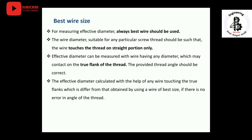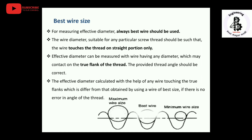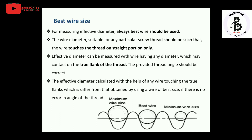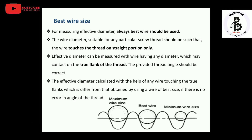The effective diameter calculated with the help of any wire touching the true flanks differs from that obtained by using a wire of the best wire size, if there are errors in the angles of the threads. Now we will see how we can define the best wire size. Selecting the maximum size such that it does not exceed and passes through the wire diameter — in the case of the best wire, it contacts onto the true flank of the threads, and its center position is considered as the best wire size diameter.